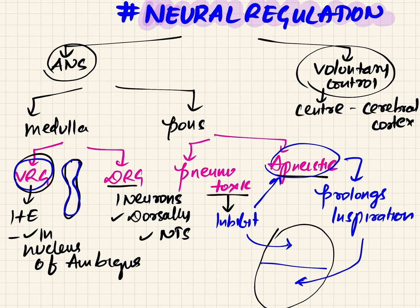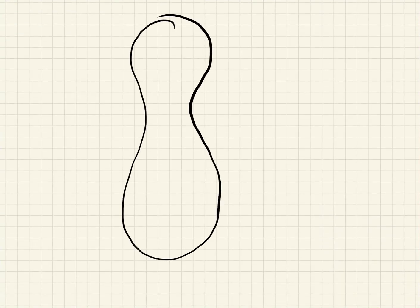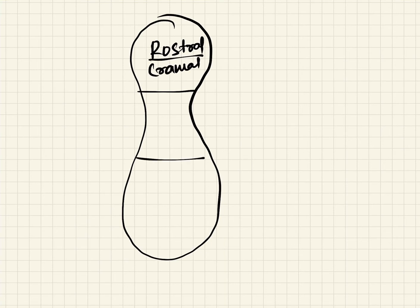The ventral respiratory group is an elongated structure with three regions: a rostral part (also called cranial or upper), an intermediate or middle region, and a caudal region. Let's now look at what each of these regions does.